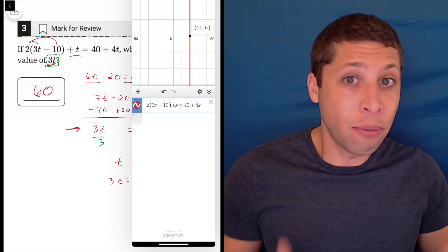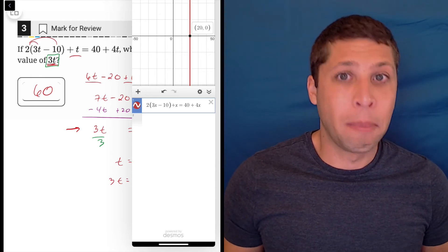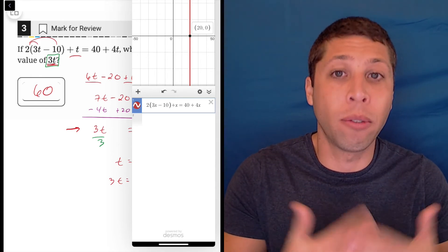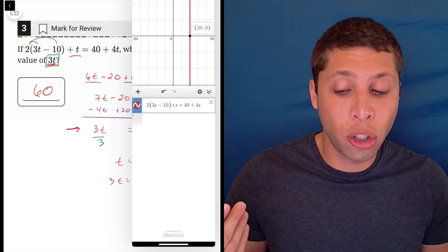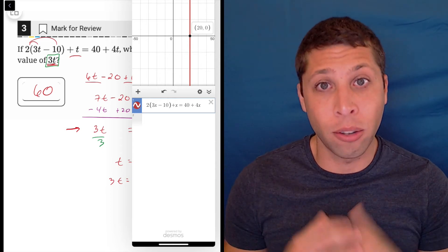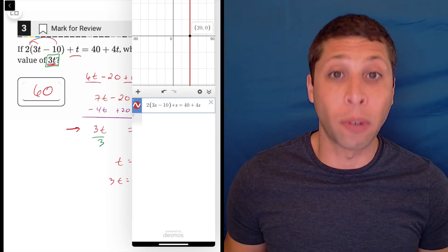But again, even if we do it this way, maybe it's faster, but the trap does not disappear, right? It tells us that 20 is the value of t, the value of x. So we still need to get 3t, 3 times 20 is 60. So the trap does not disappear whichever way you do it.